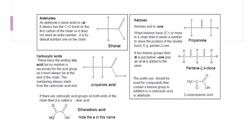If two ketone groups are present in the same structure with five carbon atoms, we write 'pent' for five carbons. Because there are two ketone groups we use 'di', and we write the full 'ane' because 'di' does not start with a vowel. With ketones at positions 2 and 4, it is pentane-2,4-dione. Numbers are separated by commas; numbers and words are separated by dashes.